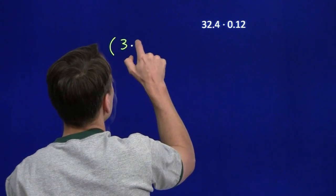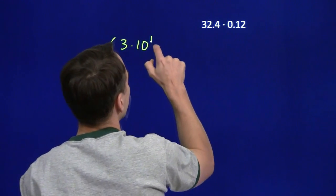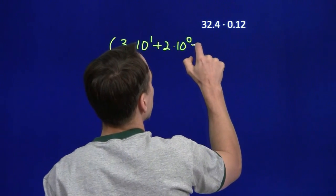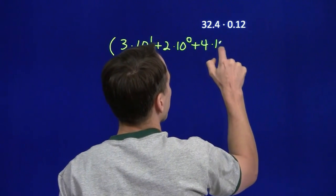32.4, that's 3 times 10 to the first, plus 2 times 10 to the 0. 2 is in the units place, and 4 is in the tenths place.